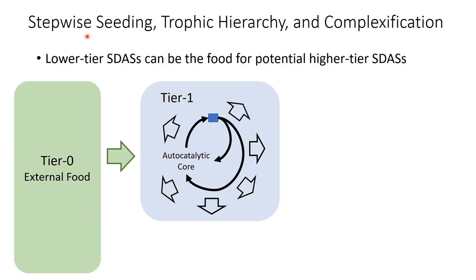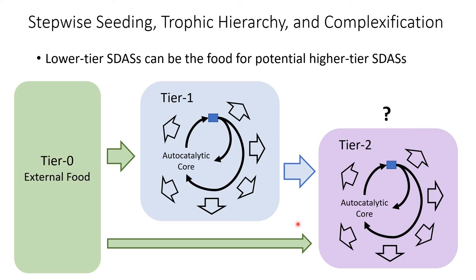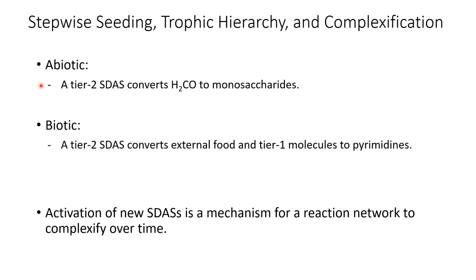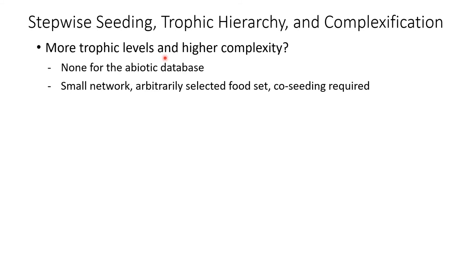Next, we examined how STASs could result in complexification. We know that tier 1 STAS can feed on tier 0 food. So it is natural to guess whether there exist some tier 2 STASs which consume the tier 0 and tier 1 chemicals as food, resulting in a hierarchical structure. By treating the tier 0 and tier 1 chemicals as external food, we can detect tier 2 STASs. For the abiotic reaction database, we found the tier 2 STAS converting formaldehyde to monosaccharides. And for the biotic reaction database, we found the tier 2 STAS synthesizing pyrimidines. These results suggest that stepwise activation of new STASs can make the reaction network complexify over time and help the system somehow remember what happened in the past within its network topology.